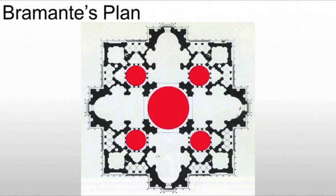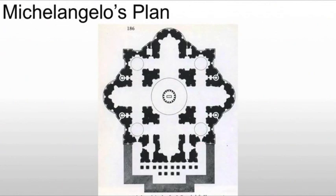While he appreciated Bramante's plan, he modifies it for structural and political reasons. When I say political, I mean speed. By the time Michelangelo is really getting started, Paul III is going to be Pope, and Paul III wants his church. So let's look at Michelangelo's plan.